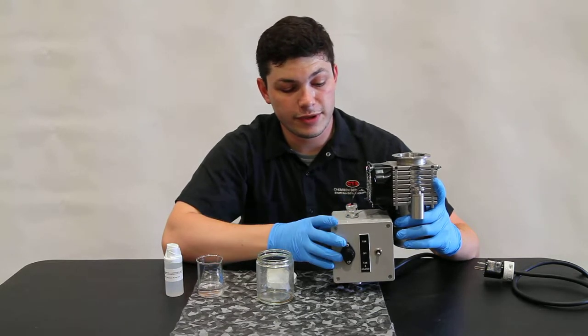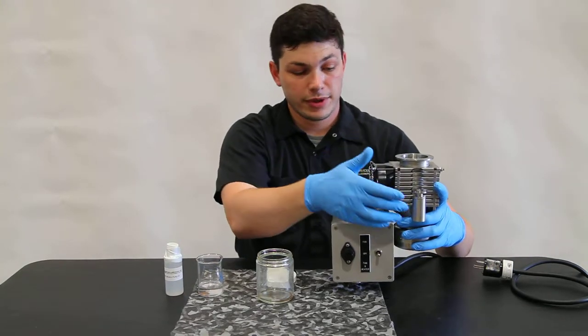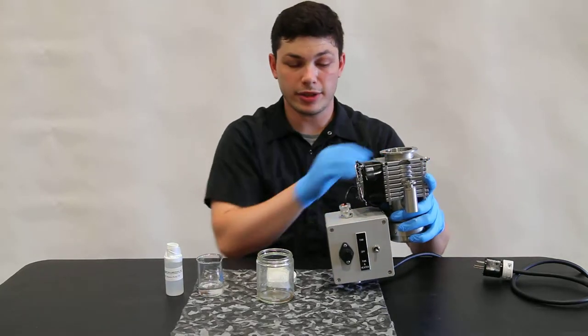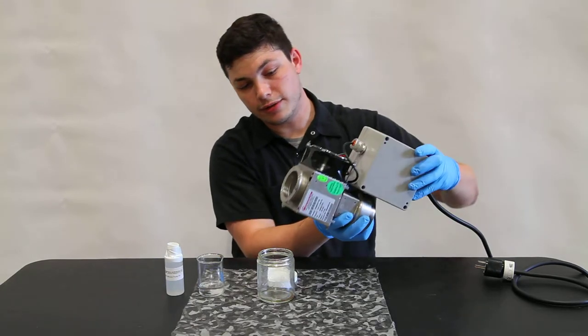As you can see, we've disassembled the diffusion pump from our unit at the KF50 clamp, at the KF16 clamp, and the plug. So what we do is we take our diffusion pump and we flip it over